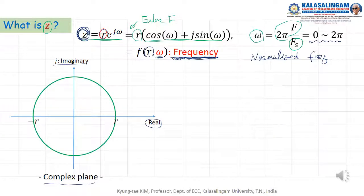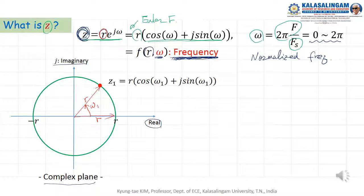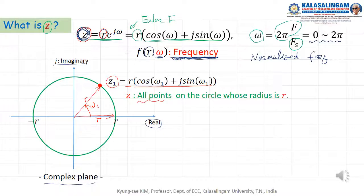Z can be represented in the complex plane with a real axis and imaginary axis. Here R means the radius of a circle. For example, for a point on the circle with radius R and angle omega 1, we can write Z1 = R cosine omega1 + J sine omega1. So Z represents all points on the circle whose radius equals R.